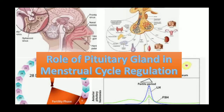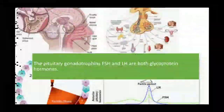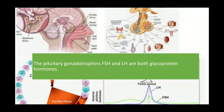Bismillahirrahmanirrahim. Today the topic of our discussion is the role of the pituitary gland in menstrual cycle regulation. There are different hormones released from the pituitary gland — both anterior and posterior — but two of them are very important in regulating the menstrual cycle.